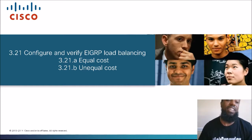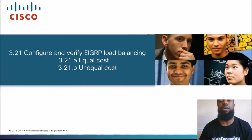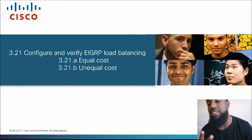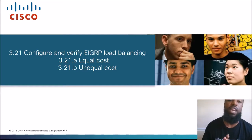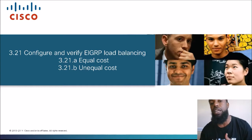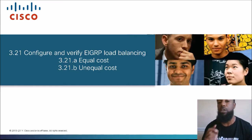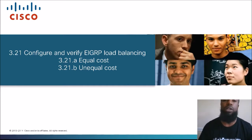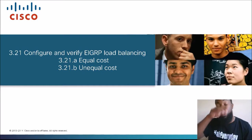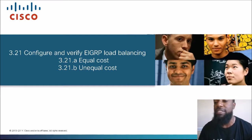Today's topic is Section 3.21, Configure and Verify EIGRP Load Balancing. We're going to cover two sections today because I felt like these go hand in hand: Section 3.21A, Equal Cost, and 3.21B, Unequal Cost.